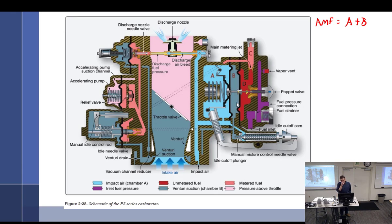And then the fuel metering force — look at the drawing. Where's C? How is C having any effect on the poppet? It's D. Fuel metering force is D, not A minus C.